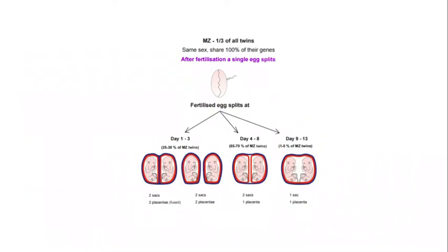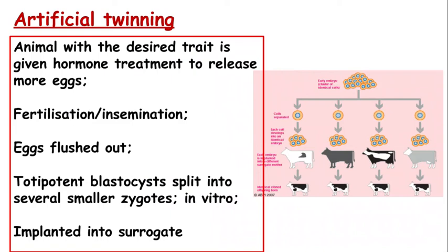We can also have natural cloning within humans, which is genetically identical twins. This involves the same egg fertilized by the same sperm, and the egg will split. Depending on whether it splits on day one to three, it will form identical twins, but the day of separation determines whether they'll be sharing a placenta or sharing a sac. That covers natural cloning.